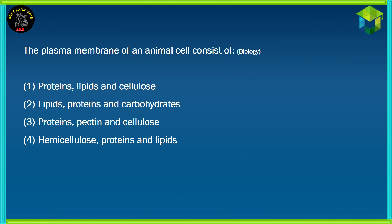Next question, the last one. The plasma membrane of an animal cell consists of: 1. proteins, lipids and cellulose; 2. lipids, proteins and carbohydrates; 3. proteins, pectin and cellulose; 4. hemicellulose, proteins and lipids. We have to look at what the plasma membrane consists of.